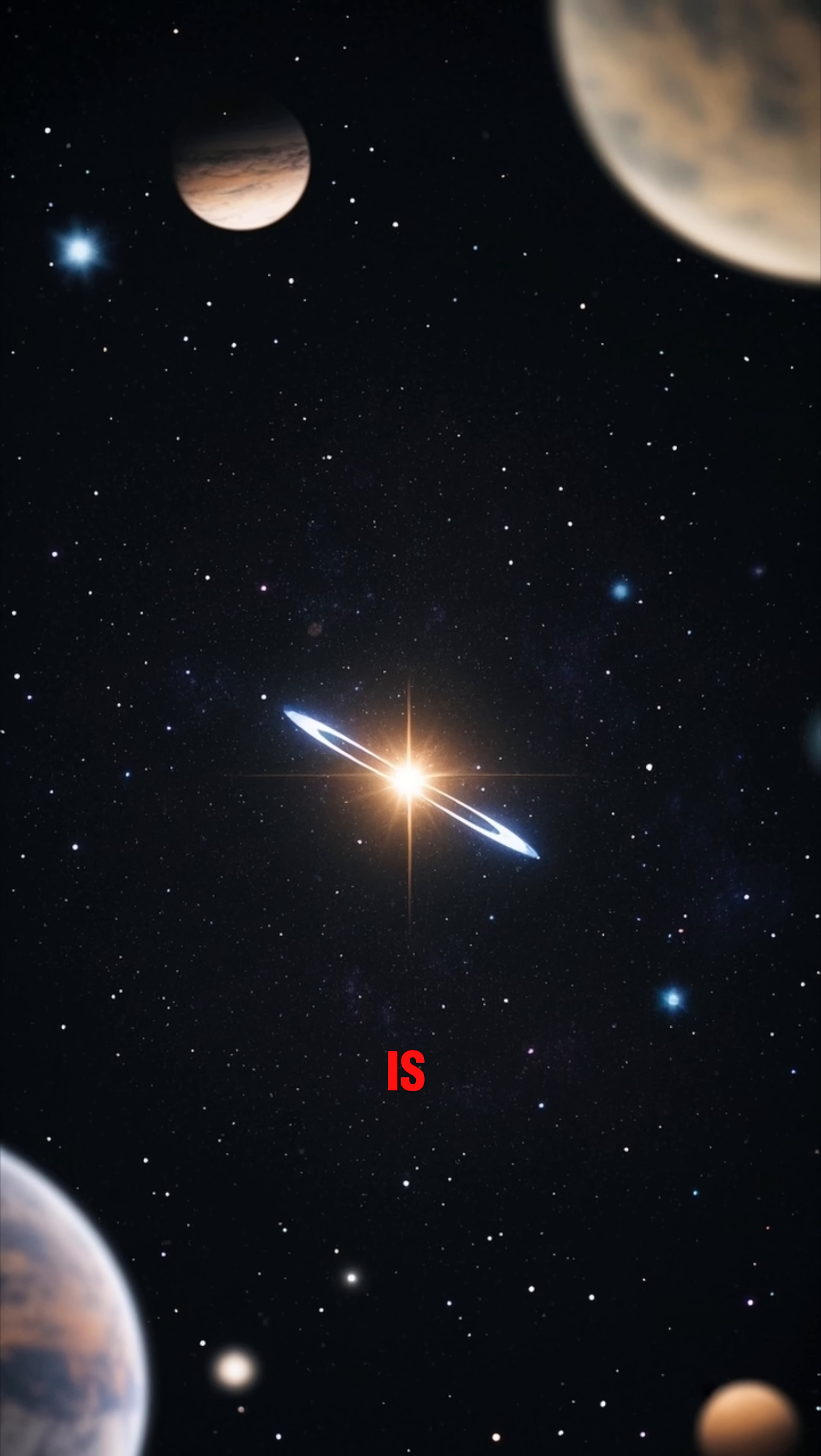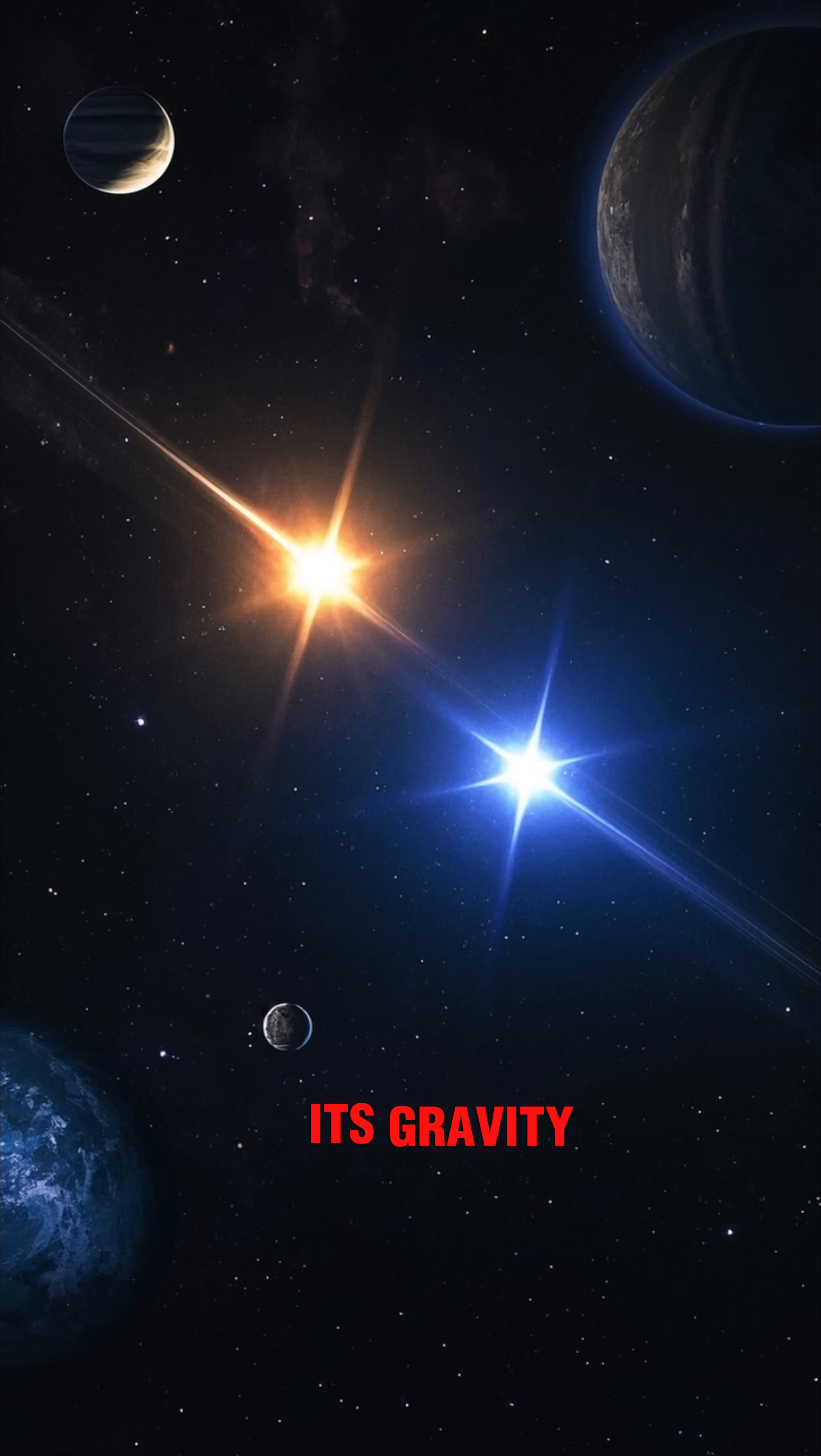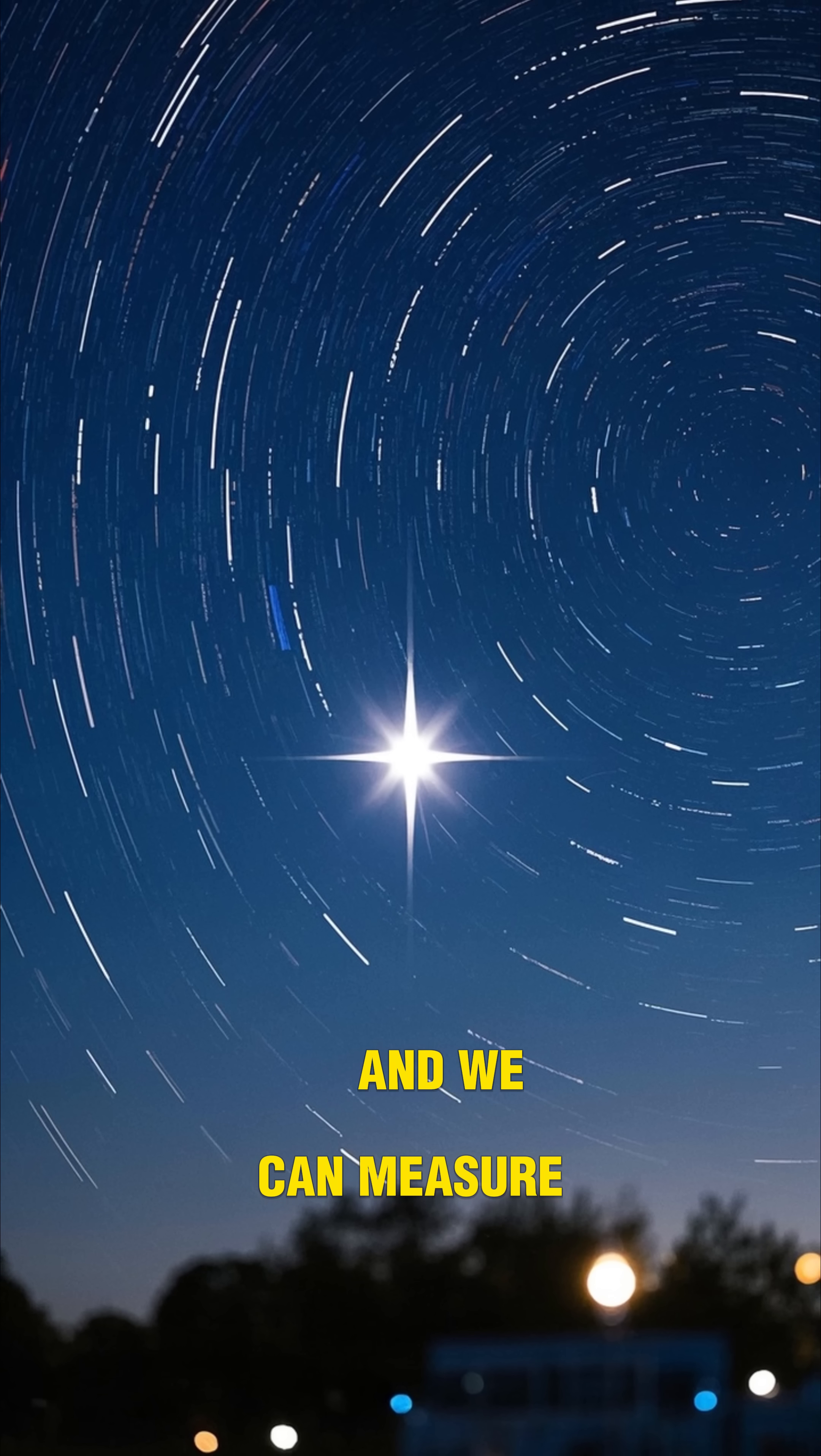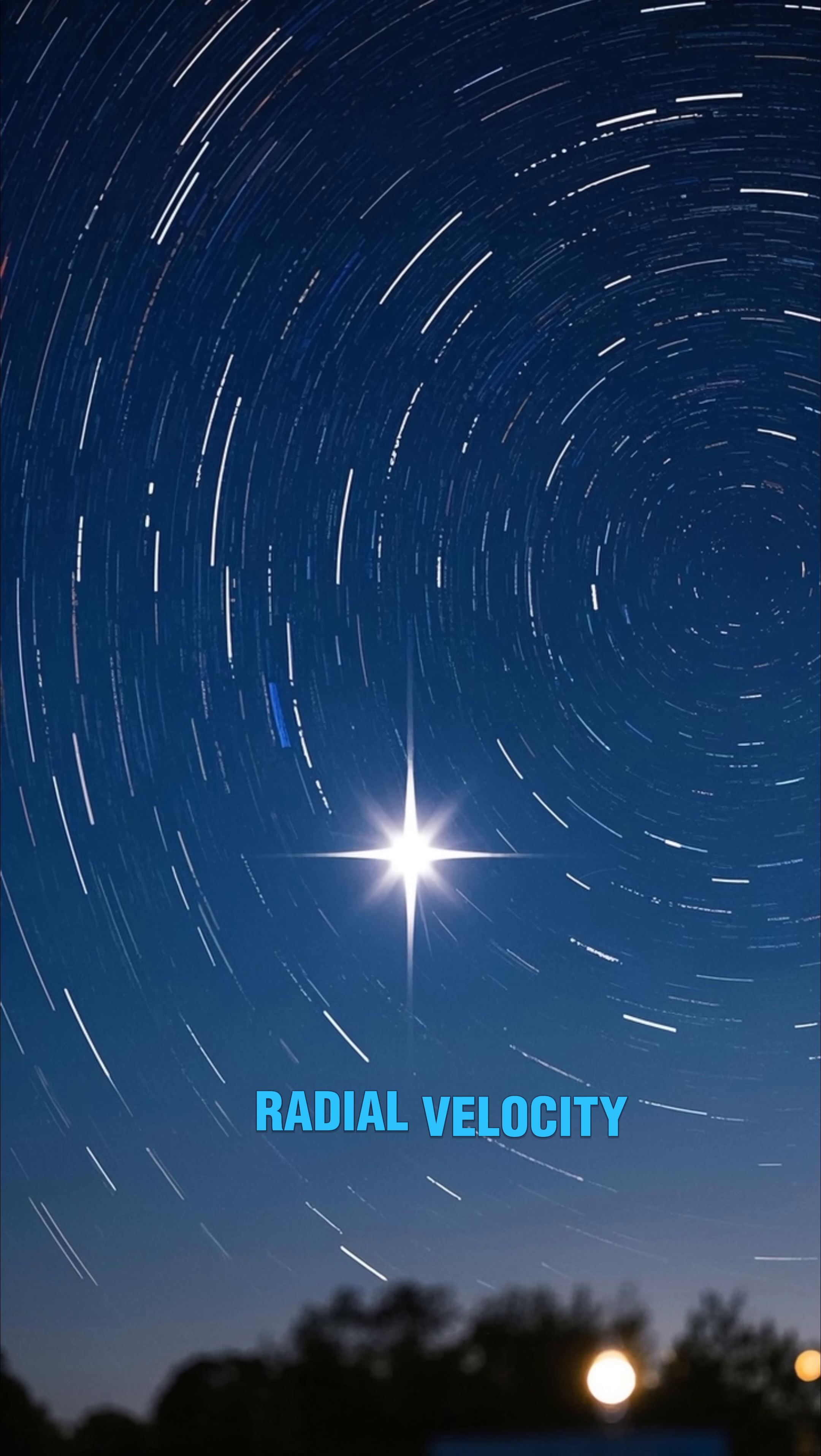The second way we find planets is by looking at the wobble in a star's light. As a planet orbits a star, it pulls on the star with its gravity, making it wobble. The bigger the planet, the bigger the wobble. And we can measure this wobble by looking at the change in the star's position over time. This is called the radial velocity method.